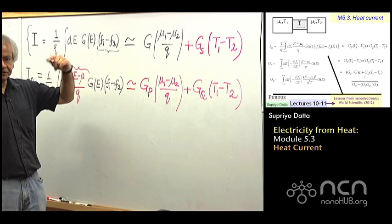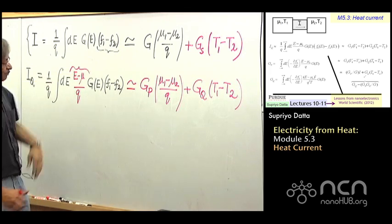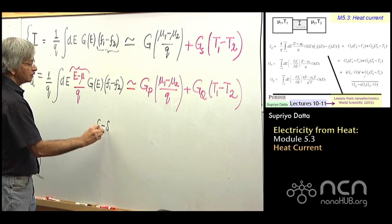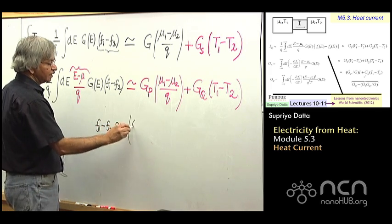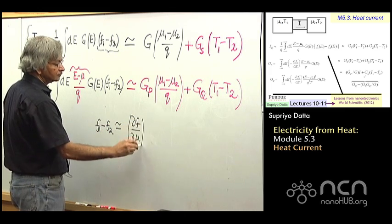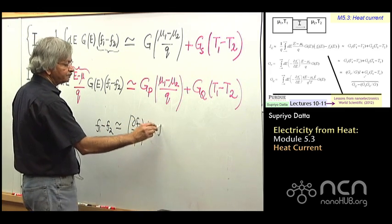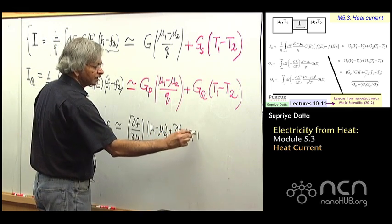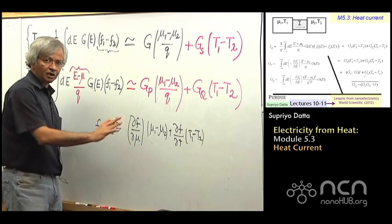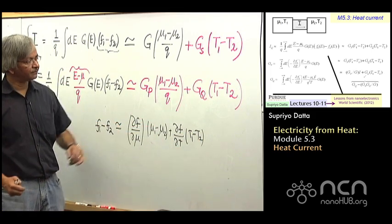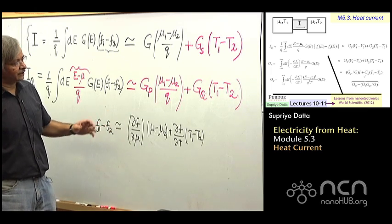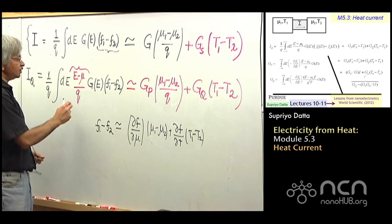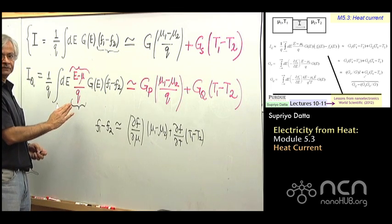And what will be Gp and Gq? Well, you can go through the algebra. It would be the same kind of thing. You take F1, the basic idea again is take F1 minus F2, approximate it with this del F del mu times mu1 minus mu2 plus del F del T times T1 minus T2. You know, exactly what we did in the last module. We would be doing much the same thing, replacing the same way. You see? And at the end of it, you might expect that these new coefficients will be just like the old one, except for this new factor of E minus mu over Q. You see?